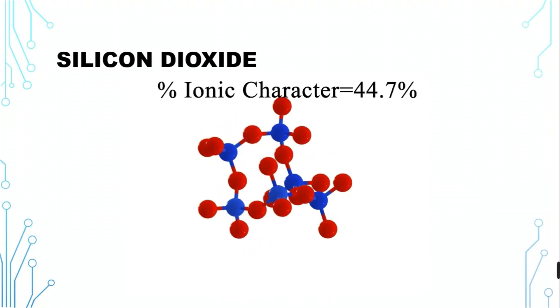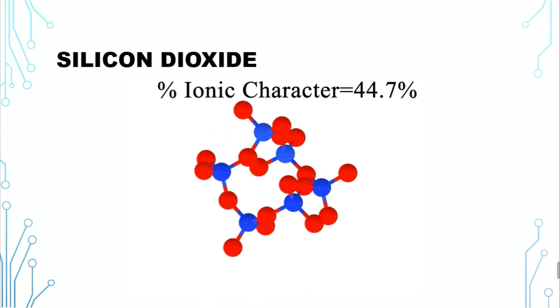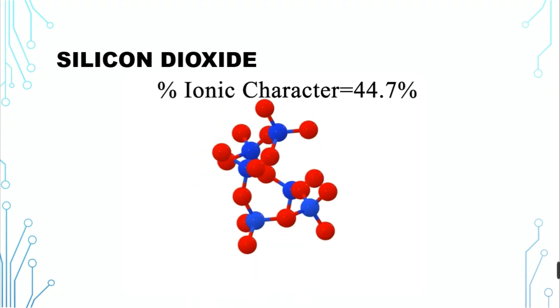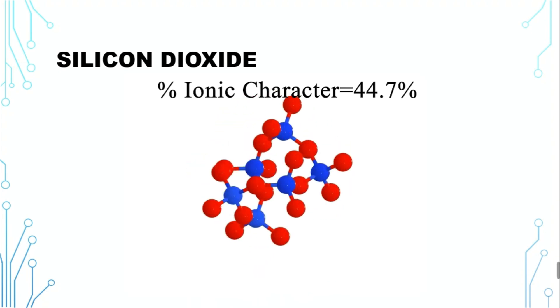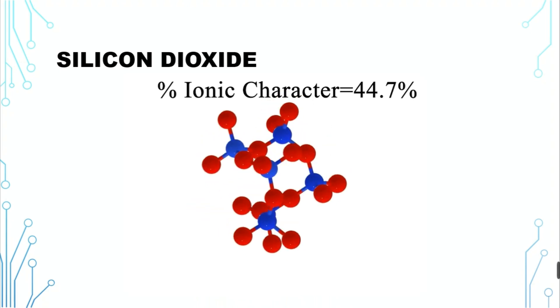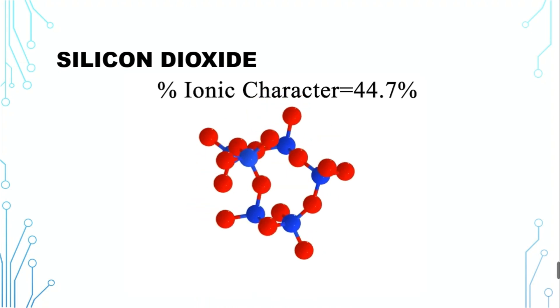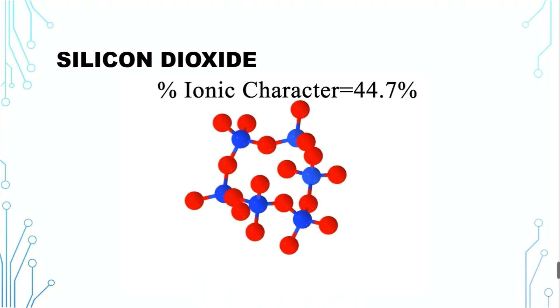This result physically means that within the chemical bond between the silicon atoms and oxygen atoms inside the compound of silicon dioxide, the ionic character takes up 44.7 percent, while the covalent character takes up 55.3 percent.